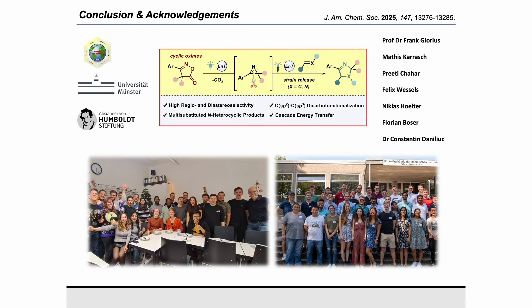This was all for the 3+2 cycloaddition of azirines via cascade energy transfer. We hope you enjoyed the talk and also to have demonstrated that this project, at the conceptual interface between bifunctional reagents and strain release, can represent a starting point for further investigations in the domain of N-heterocycle synthesis via energy transfer catalysis. I want to warmly thank my brilliant co-authors Mathis, Priti, Felix, Niklas, Florian, and Konstantin for the life-saving X-ray data, Frank for his supervision and the whole Glorious Group, the Humboldt Foundation for financial support, and you for your kind attention. Feel free to drop us an email or write comments below the video if you have any questions.